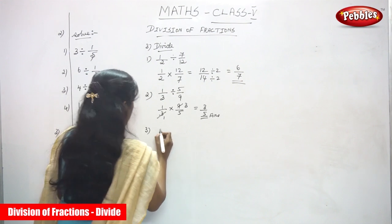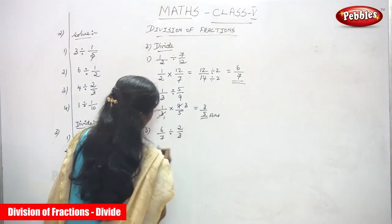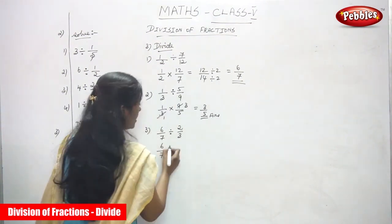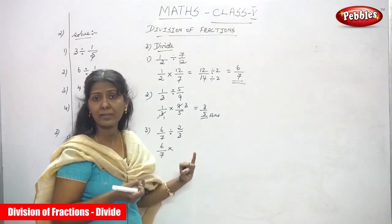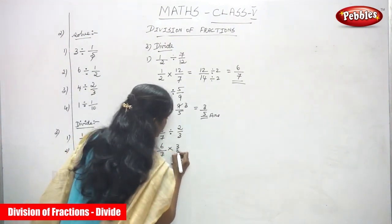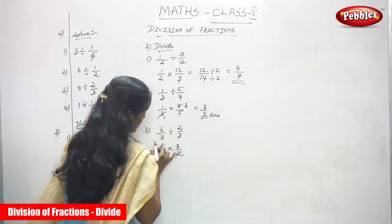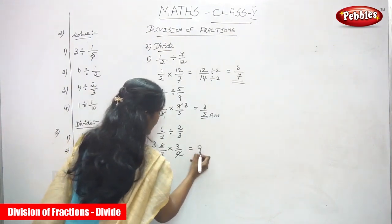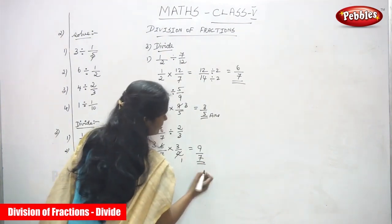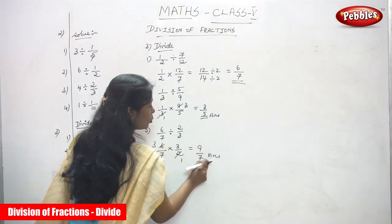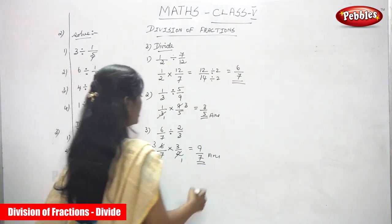Third sum: 6/7 divided by 2/3. Write 6/7 as the dividend. Take the reciprocal of the divisor 2/3 to get 3/2. Cross-cancel: 6 and 2 share factor 2, giving 3 and 1. Multiply: 3 × 3 = 9 and 1 × 7 = 7. The answer is 9/7. You cannot simplify this further, so 9/7 is the final answer.